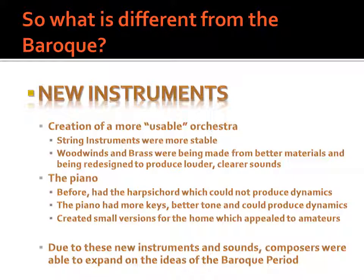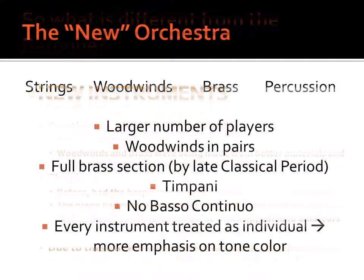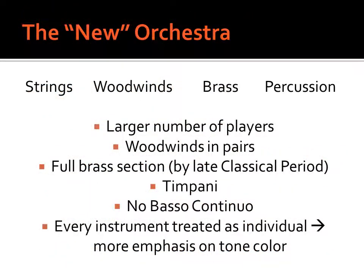It was very much due to these new instruments and the sounds they could create that composers were able to expand on the ideas of the Baroque. In the newer orchestra that developed, you had the usual strings, woodwinds as sometimes in the Baroque, and also a brass section which by the end of the classical period included trumpets, trombones, and French horns. There was a percussion section as well — in this case only timpani — but in almost every piece of classical music written for the newer orchestra, you actually had percussion, whereas in the Baroque you did not.